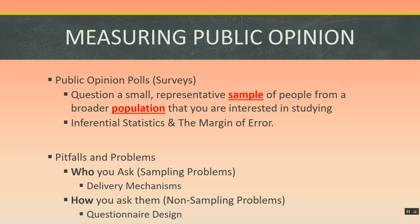If we could talk to every single person, it would no longer be a public opinion survey — it would be a census, which is expensive and in most cases completely impractical. Instead, we talk to a select subgroup called the sample. A sample is a subset of individuals within the broader population, selected to receive and respond to the survey questionnaire. Researchers use patterns in the sample's answers to make inferences or draw general conclusions about how the overall population tends to feel or think.